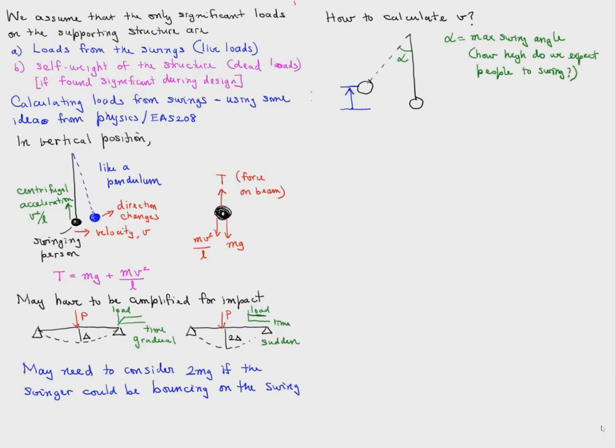The potential energy of the swing in the highest position is mg times L times (1 minus cosine alpha). The kinetic energy in the vertical position, the lowest position, is 1 half mv squared.